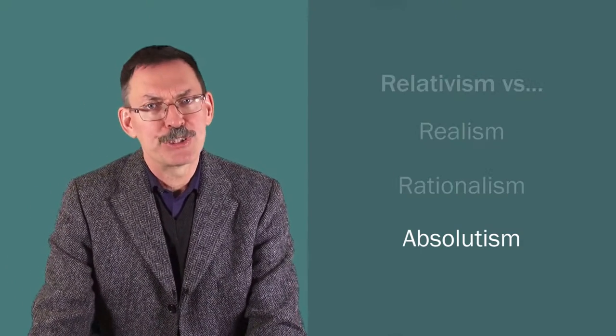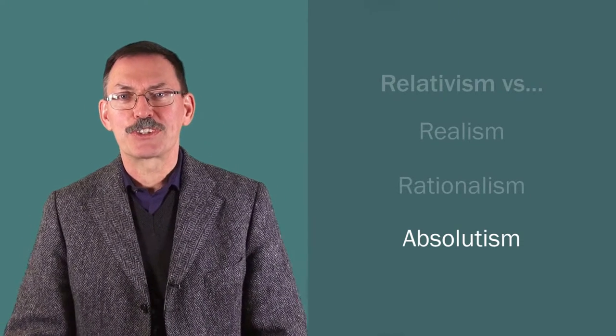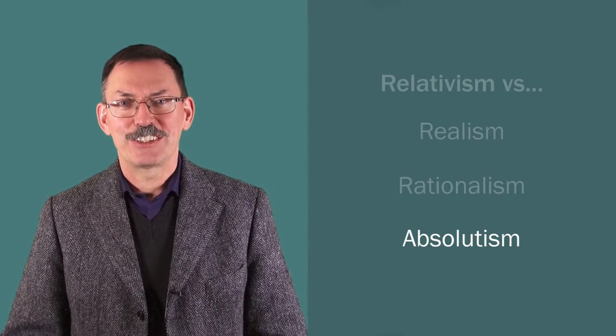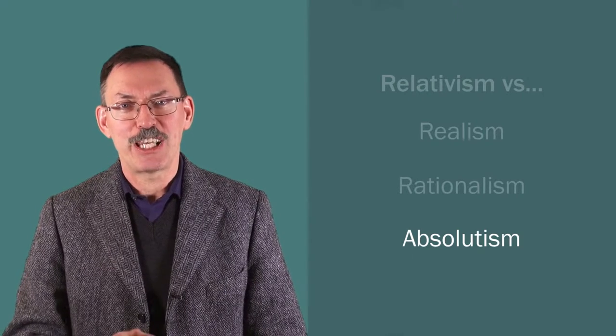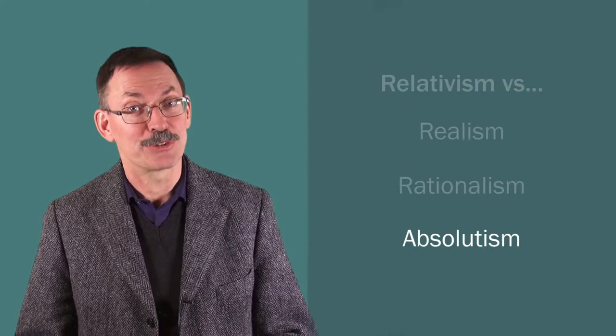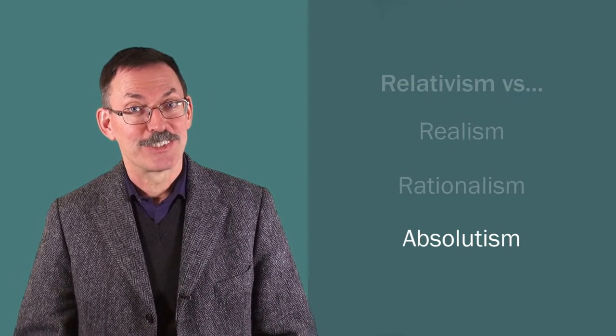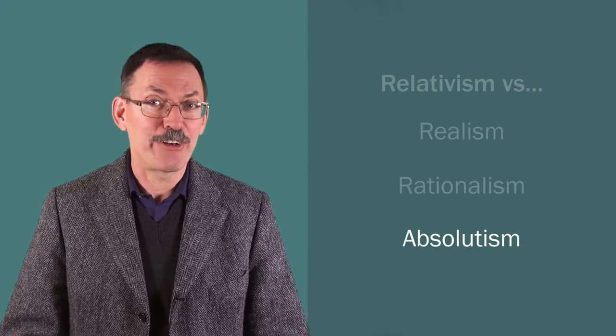Let's start with absolutism. Absolutism seems the most, at least terminologically, the most important opponent of relativism. Something is either relative or absolute. If it's absolute, it isn't relative. That seems to mark a very clear opposition.